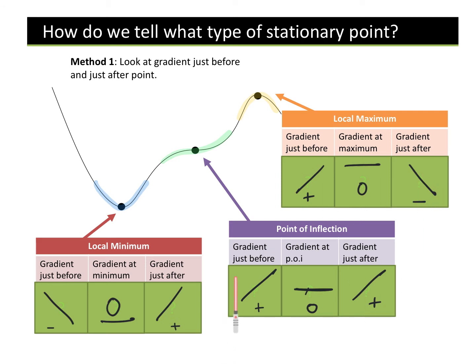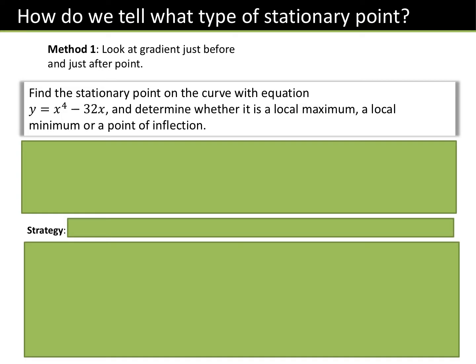For a minimum it's like a smiley face, for a maximum an unhappy face, and a point of inflection is like a smirk. Remember, not all points of inflection have a gradient of zero. If it does, it's called a saddle point.